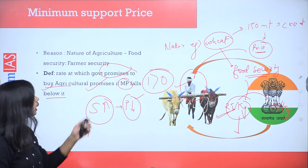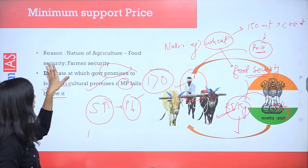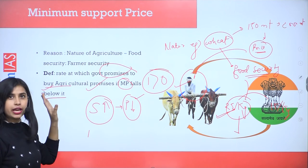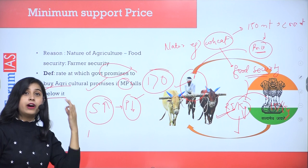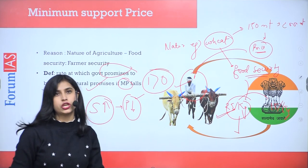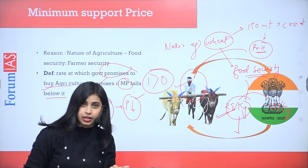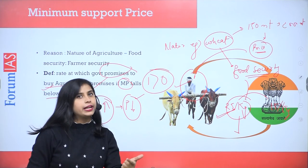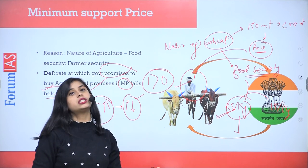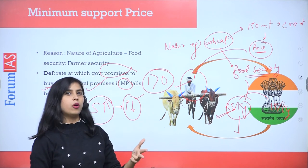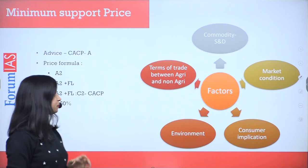MSP ensures three things: number one, good food production; second, farmer security; third, food security. So it is protecting the farmer, protecting the consumer, and ensuring enough production in the economy. Three benefits come from MSP.